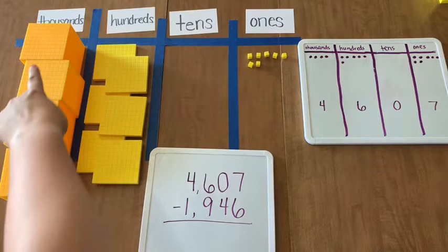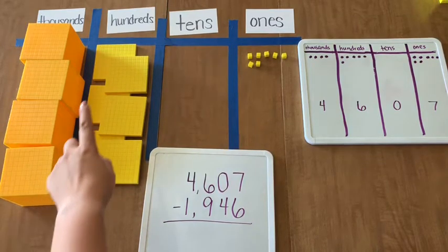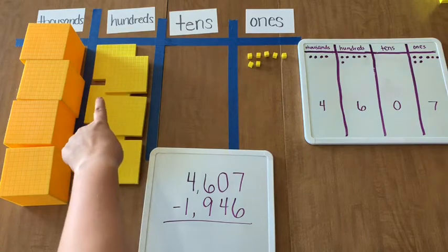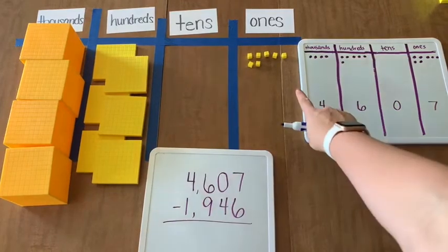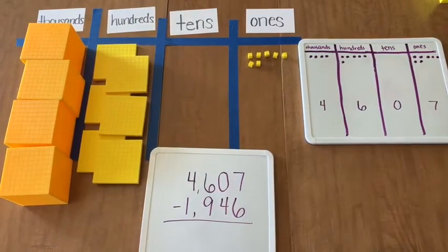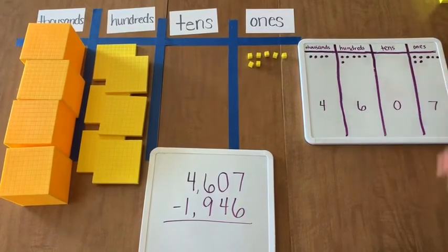So I have 1,000, 2,000, 3,000, 4,000, 100, 200, 300, 400, 500, 600, so there's 4,607 ones. And over here we also have 4,607.